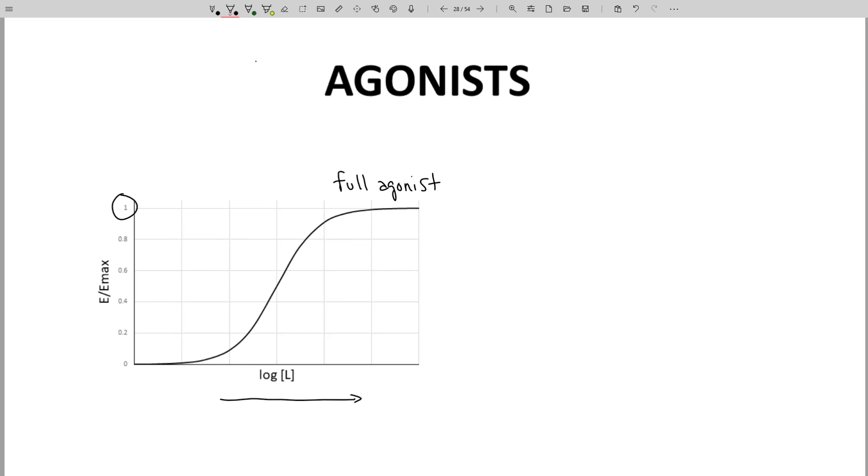Activity curves for receptors are normally plotted as shown. The response is the y-axis, listed as a ratio of E to Emax, or sometimes just E. E stands for response or effect. The log of the ligand concentration is the x-axis.